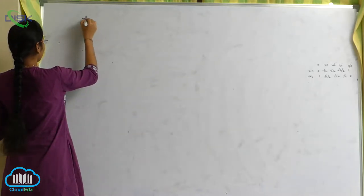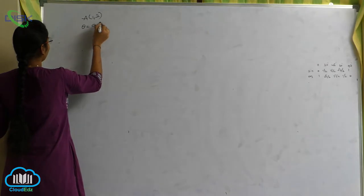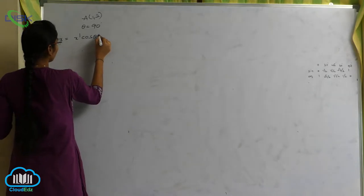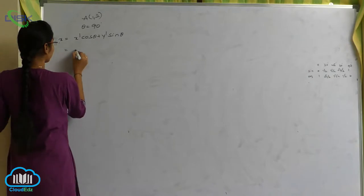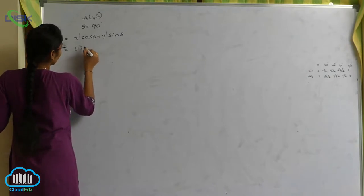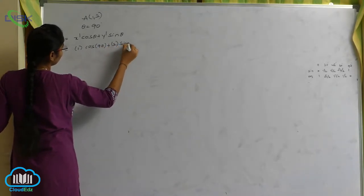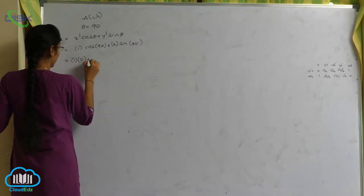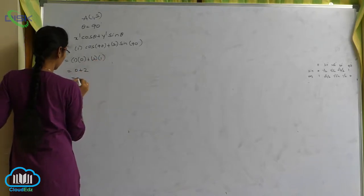For point a = (1, 2), theta equals 90 degrees. x is equal to x-dash cos theta plus y-dash sin theta. So x-dash is 1, cos 90 is 0, plus y-dash is 2, sin 90 is 1. So 0 plus 2 equals 2. Therefore x equals 2.